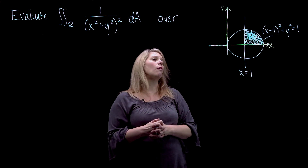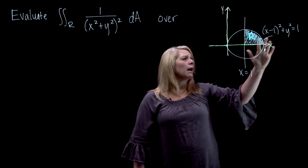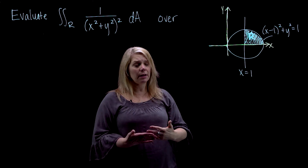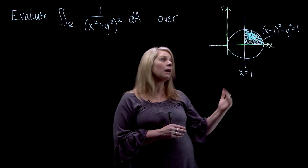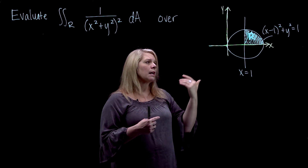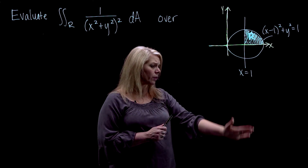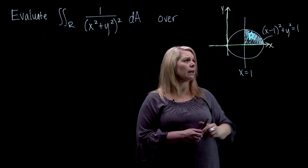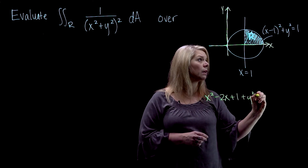If our circle were centered at the origin, we could just write r equals a constant. But here we have to do a little work converting to polar coordinates. We did a problem like this at the very beginning of the semester in the week one review content. I'm going to expand out the x minus 1 quantity squared: that gives x squared minus 2x plus 1, plus y squared equals 1. Subtracting 1 from both sides and rearranging, we get the form that was given on that review material.